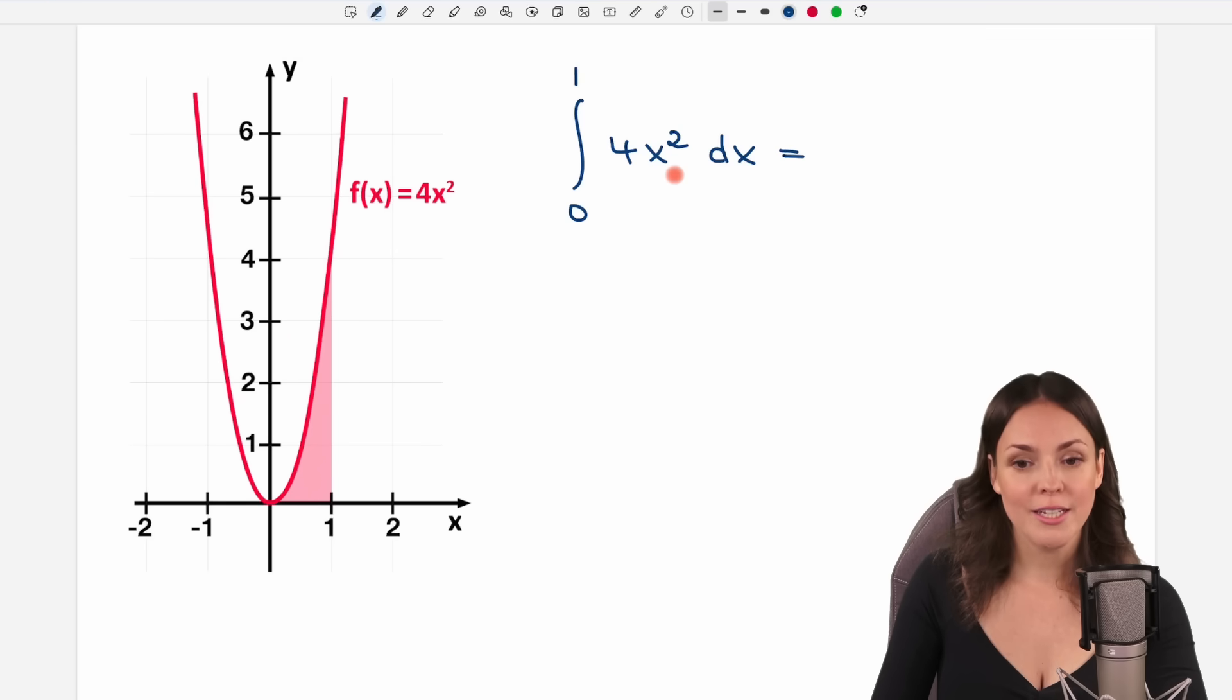We know that we have to find the antiderivative. Limits are from 0 to 1. What is the rule again for the antiderivative? We're going to increase our exponent first, so instead of x to the power of 2, we're going to have x to the power of 3.